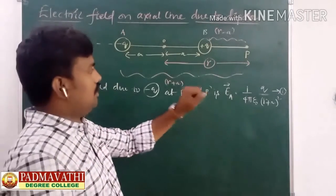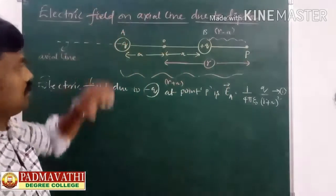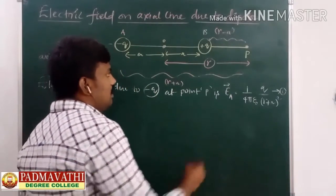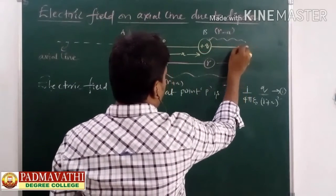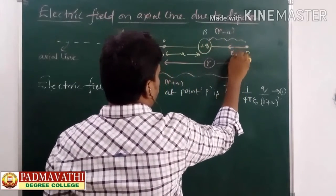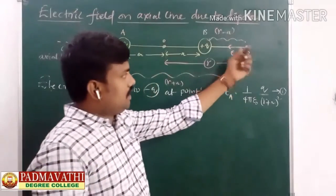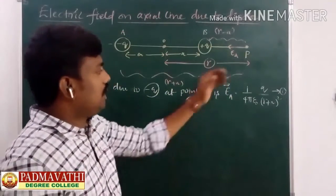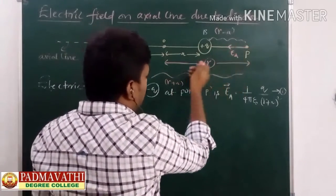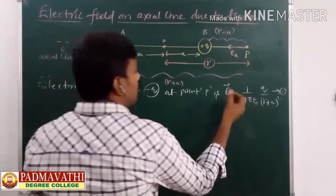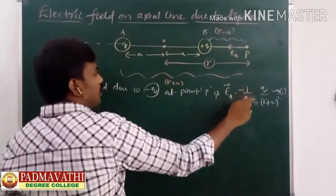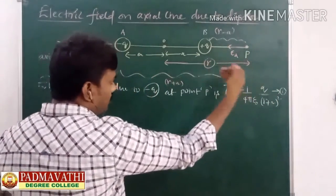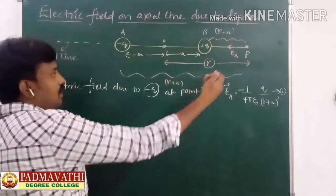Now, what is the direction of EA? EA is produced by the minus Q charge, so EA will be directed towards minus Q — because the electric field always points towards a negative charge. Since this is opposite to the direction of R-hat, we write EA as minus 1 over 4πε₀ times Q over (R + A)², where the minus sign indicates it is in the direction opposite to R-hat.